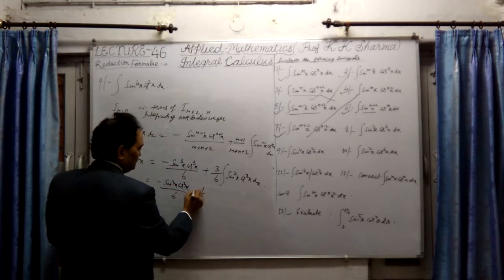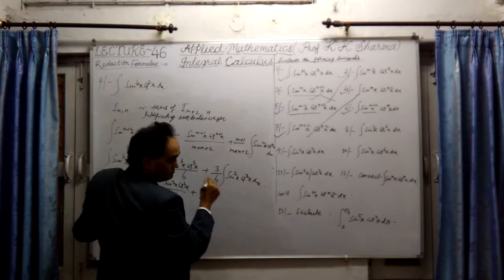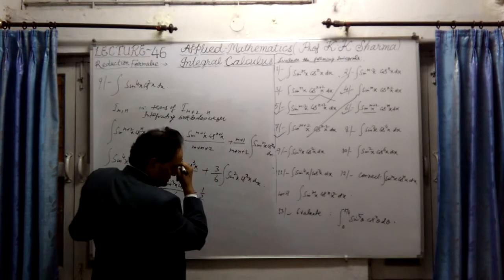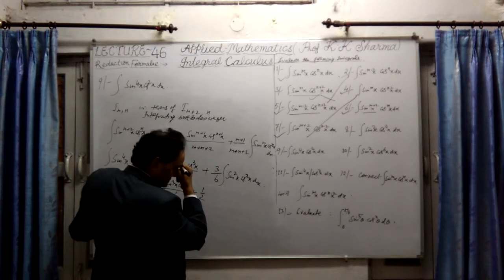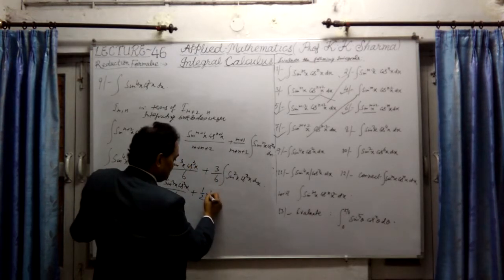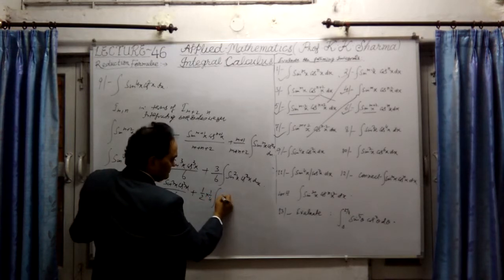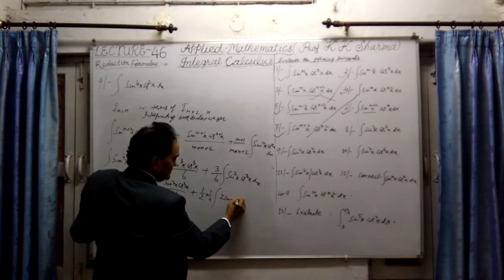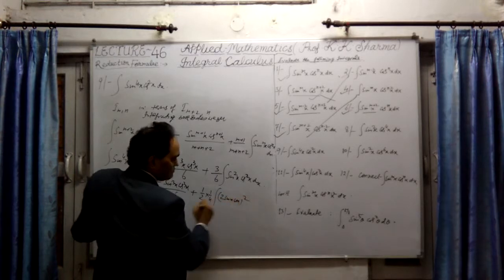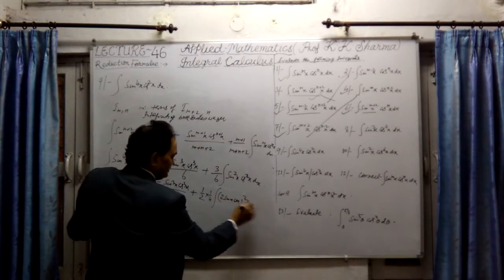This is 1.2 here. Now if I multiply this by 4 and divide it by 4, let me write this as 1.4 into 4, into 4, into 2, into sin x, into 2, into cos x whole sphere, into dx.